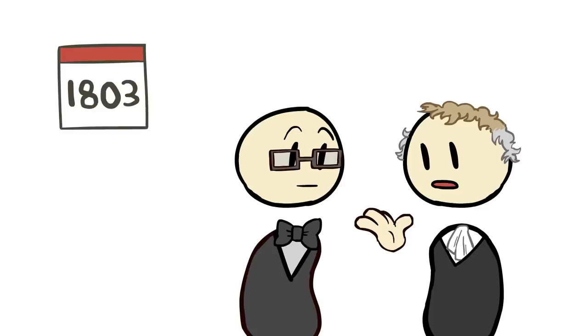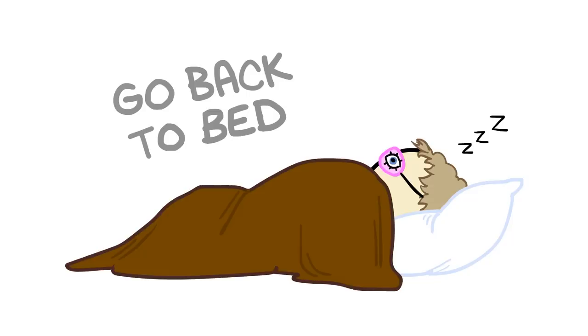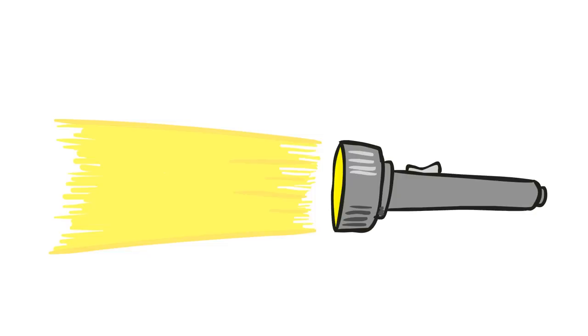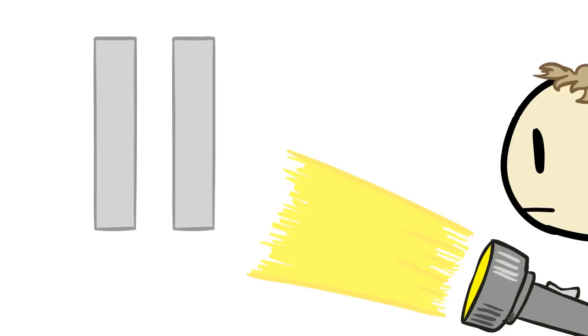A man named Thomas Young said, let's take that principle and apply it to light. And so he did the simplest thing imaginable. He took a monochromatic light to make sure that all the light had the same wavelength, and he shone it on a partition with two small slits cut into it.